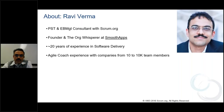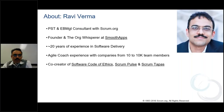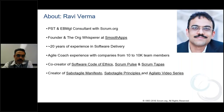I've been an agile coach for 10-person companies and also 10,000-person companies. I've learned a lot, made a lot of mistakes, got a lot of scars, and hopefully try not to repeat the same mistakes. Some things I'm really proud of: as part of the Scrum.org community, we created the software Code of Ethics, we created the Scrum Pulse webinar series. I created this with Mark Noneman maybe two and a half years ago — we've got almost 40 webinars. I also created the Sabotagile Manifesto and Sabotagile Principles after a particularly painful engagement. If you have a sense of humor, take a look.